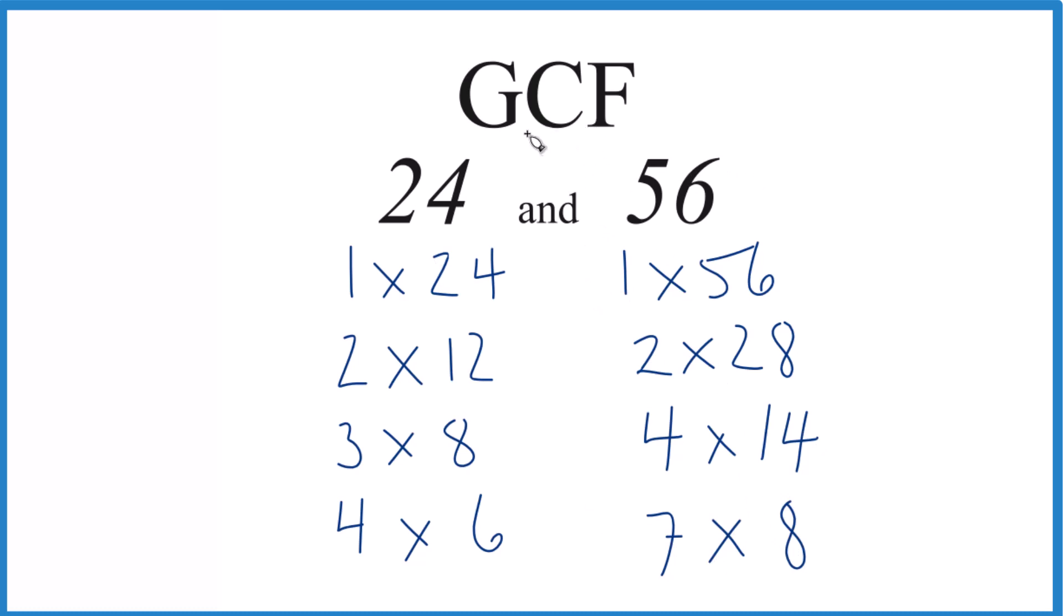Now we want to choose the common factors. So 1, that goes into 24 and 56. 2, yeah. 4, that's common between both numbers. What else do we have? It looks like the greatest common factor is 8.